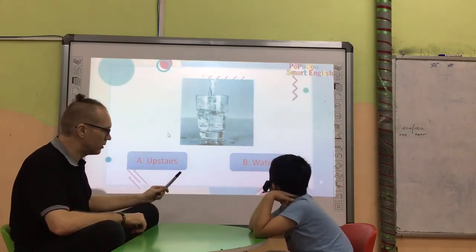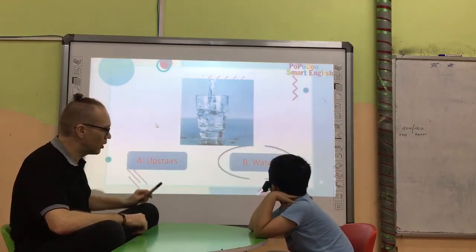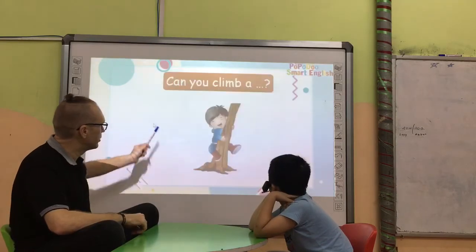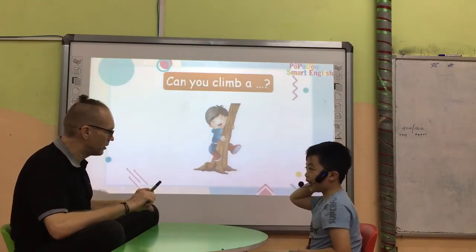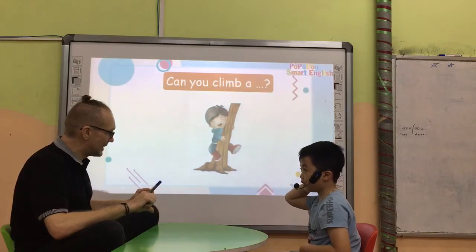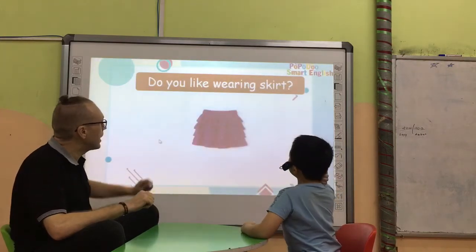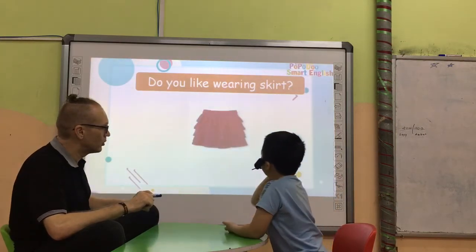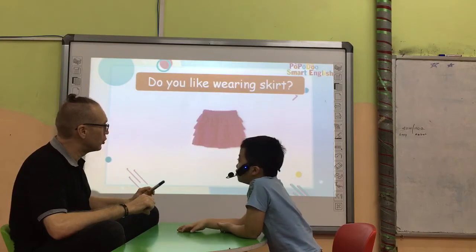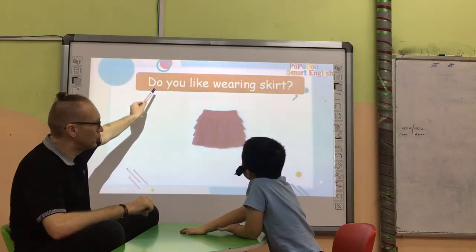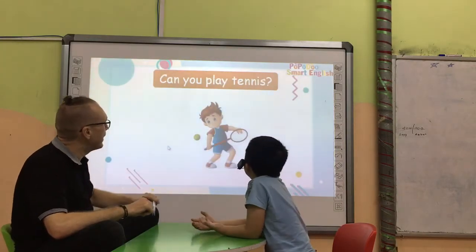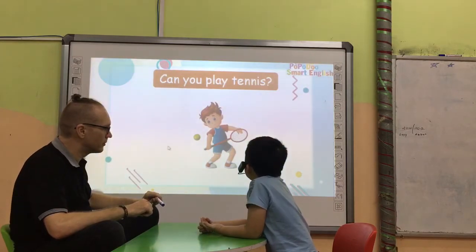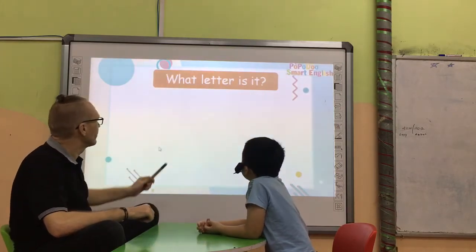A or B? B. What is it? Water. Can you climb a tree? No, I can't. Do you like wearing a skirt? No, I don't. Can you play tennis? Yes, I can. B.